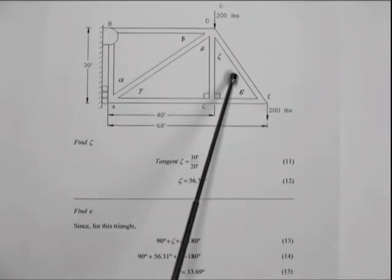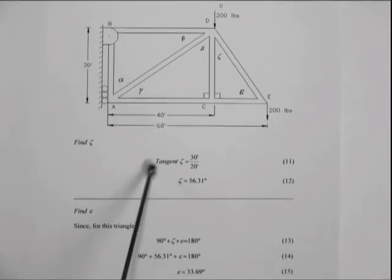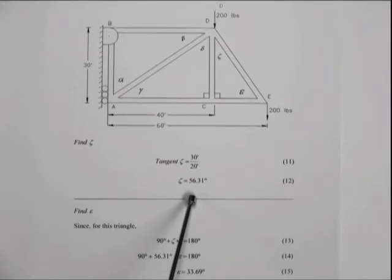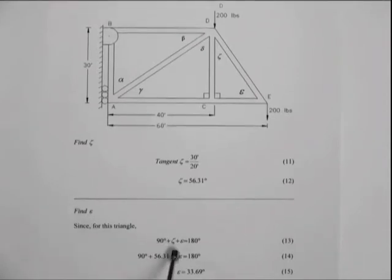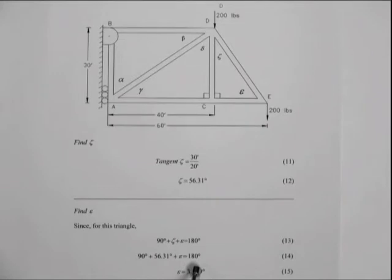Next, we will analyze this triangle. First, we will find zeta. If we note that the tangent of zeta equals 30 feet divided by 20 feet, we can determine that angle zeta is equal to 56.31 degrees. To find the angle epsilon, we note that the triangle is once again a right triangle. Thus, 90 degrees plus angle zeta plus angle epsilon must equal 180 degrees. Substituting in our known values, epsilon is equal to 33.69 degrees.